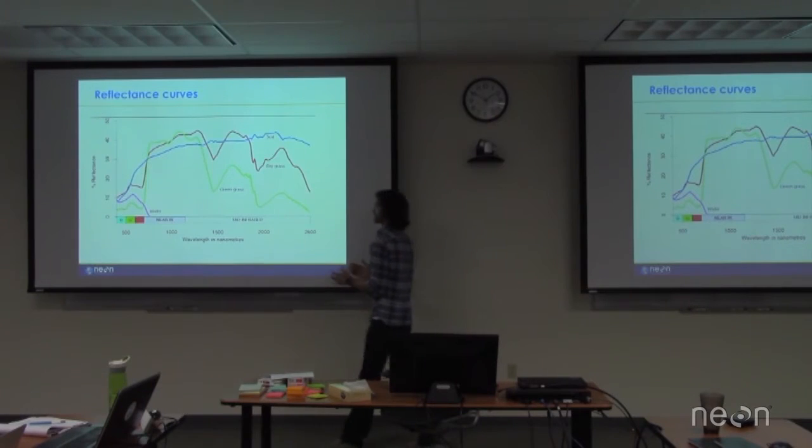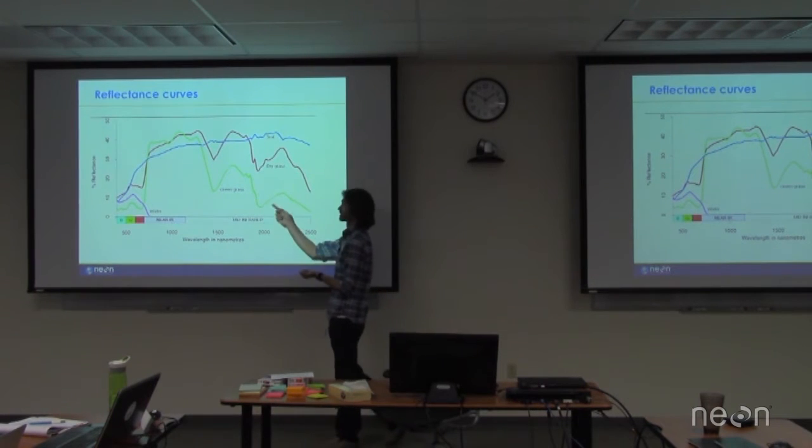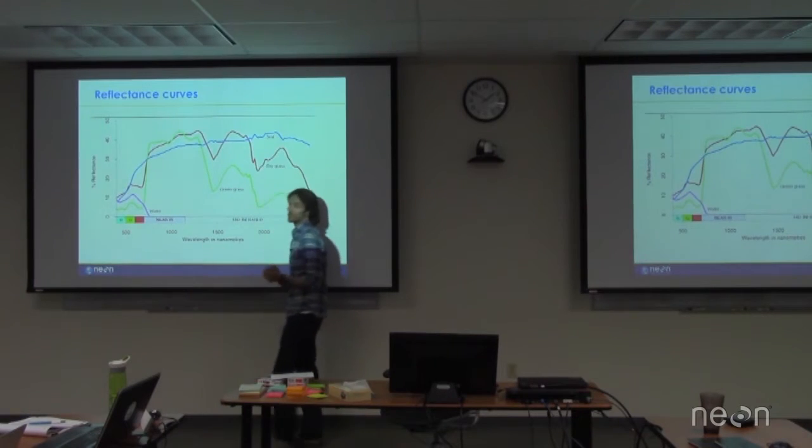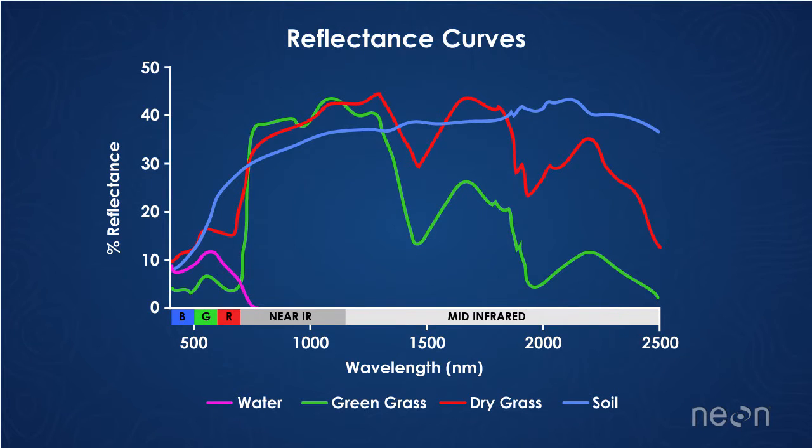So when we look at these curves, something that we're generally very interested in here at neon is the vegetation curve. This one here is green grass, so this is the reflectance curve of vegetation. You can see it has this nice big jump right here as we're going into the near-infrared portion of the spectrum.